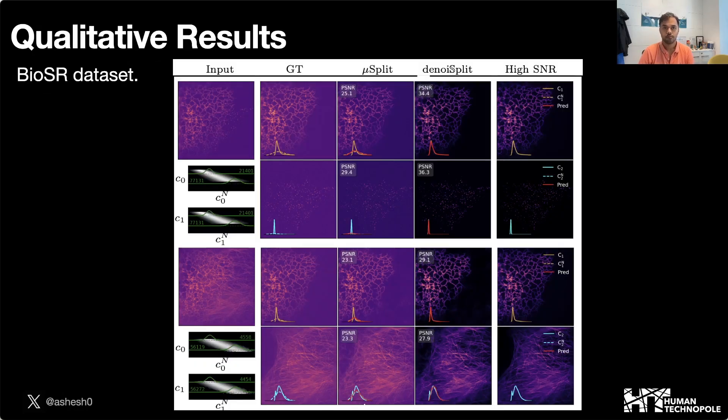We evaluate our performance on multiple datasets and within each dataset on multiple splitting tasks. Here I show you two tasks on the BioSR dataset. On the top left you see the input, which is a superposition of two structures, and the noisy ground truth—two noisy ground truth channels in the second column.